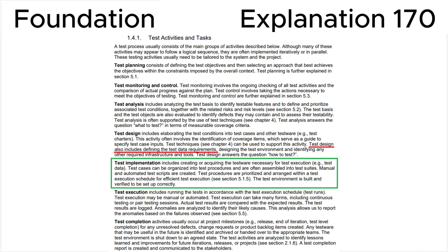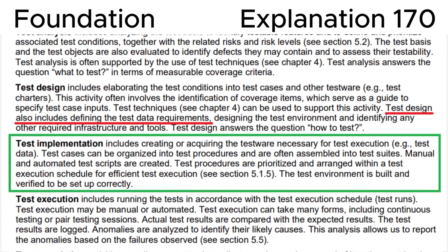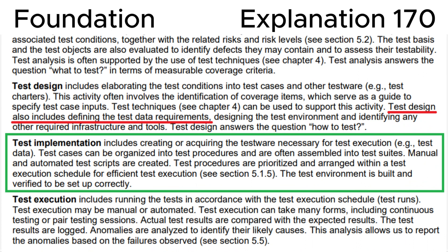Let's look at section 1.4.1, Test Activities and Tasks, in the ISTQB syllabus. Test implementation includes: creating or acquiring the testware necessary for test execution, e.g. test data. Test cases can be organized into test procedures and assembled into test suites. Manual and automated test scripts are created. Test procedures are prioritized and arranged within a test execution schedule for efficient test execution. The test environment is built and verified to be set up correctly.